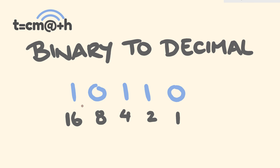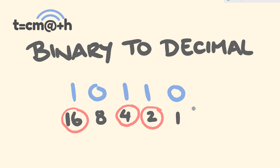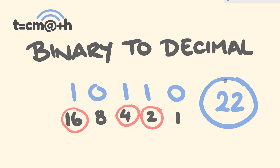Now, anywhere there is a 1 in the binary number, we are going to circle that particular number underneath it — so 16, 4, and 2. Then we literally just add these together. 16 plus 4 is 20, plus 2 is 22. And that is what 1, 0, 1, 1, 0 is in decimal.